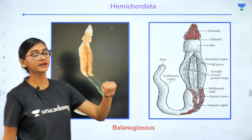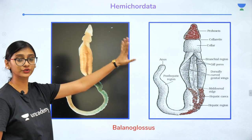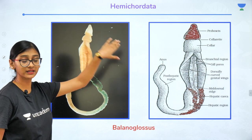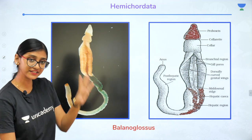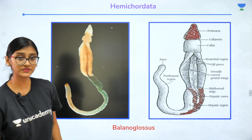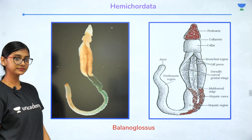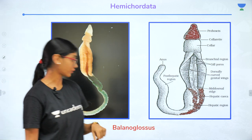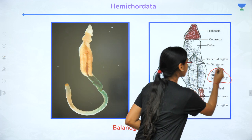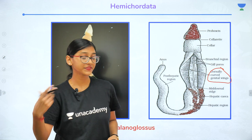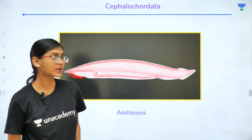Before discussing Protochordata examples, let's talk about Hemichordata. In your NCERT, Hemichordata is given under Protochordata, but actually it is classified apart from Chordata. 'Hemi' means half — they are half-chordates. Chordata has a dorsal nerve cord whereas Hemichordata has an epithelial nerve cord, dorsally curved genital wing, and they are worm-like organisms.